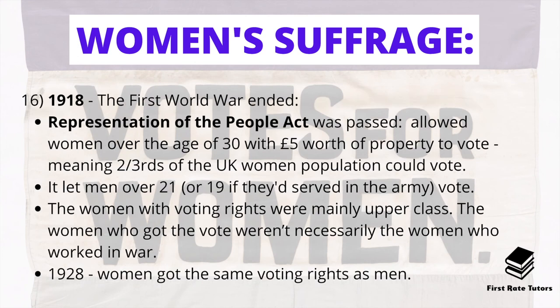By 1918 the First World War ended and the Representation of the People Act was passed, allowing women over the age of 30 with £5 worth of property to vote — meaning two-thirds of the UK's women population could vote. The act was also extended to men over 21, or 19 if they had served in the army. However, a major criticism of this act is that the women who gained the vote were mainly upper class women who hadn't necessarily been the ones working in the war effort. It was not until 1928, ten years later, that women gained the same voting rights as men.